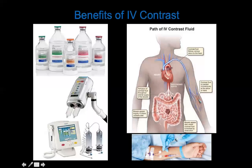A common misconception is that you can give a minuscule amount of contrast to image just the hand. But it doesn't work that way — the contrast goes all over the body. You need a similar dose regardless of whether you're imaging a small area, because the contrast travels through the veins, through the heart, and then to your arteries to enhance different structures.